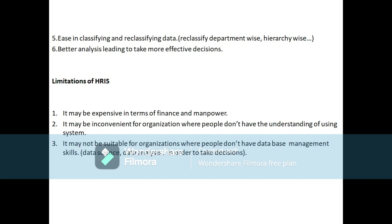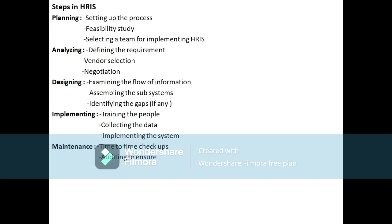Coming to the steps in HRIS — what are the steps involved if we want to implement a HRIS system in our organization? The process involves: planning, analyzing, designing, implementing, and maintenance.